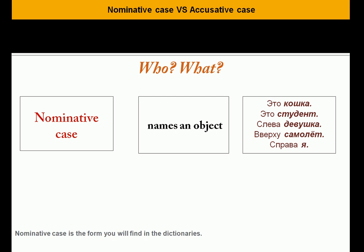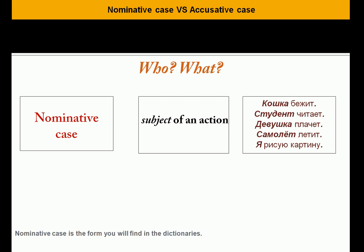The girl is to the left — слева девушка. Вверху самолёт — the plane is in the sky. Справа я — I'm to the right, or 'to the right is I' if you want a literal translation. So I think this was simple. Now another case when you want to use the nominative case — that is the dictionary form — is when you indicate the subject of an action. Кошка бежит.